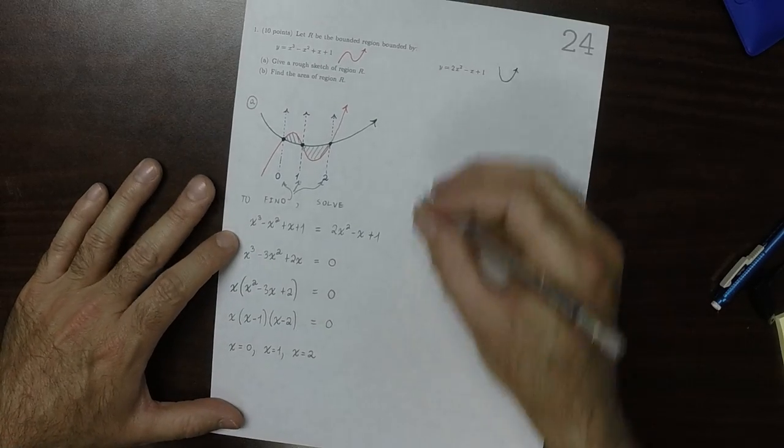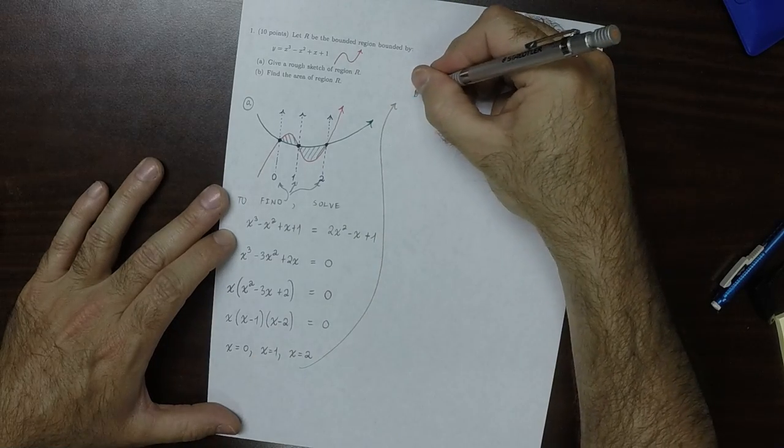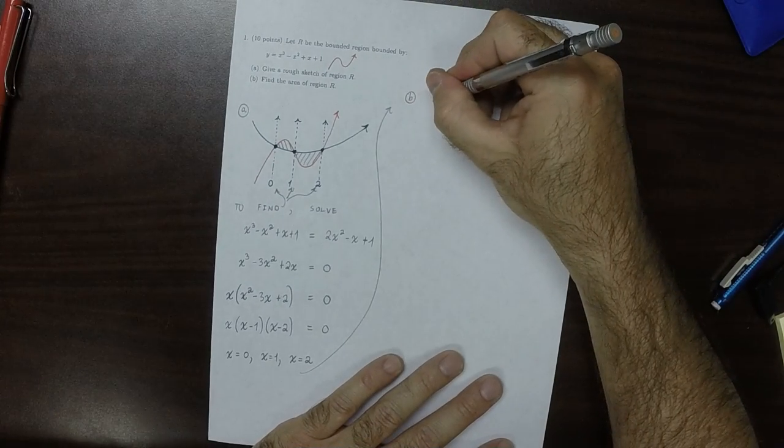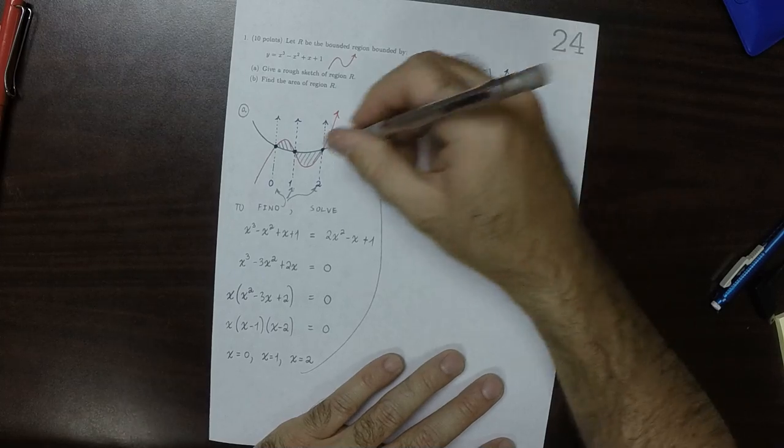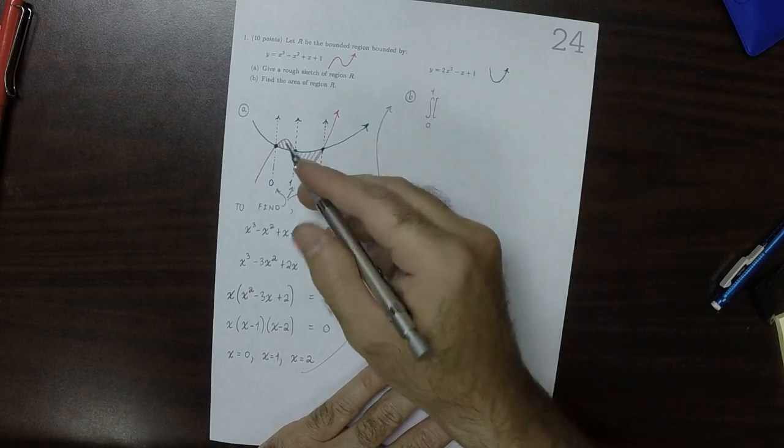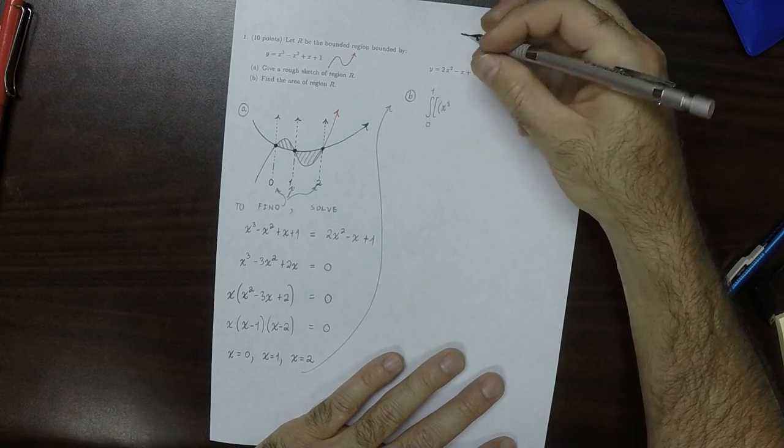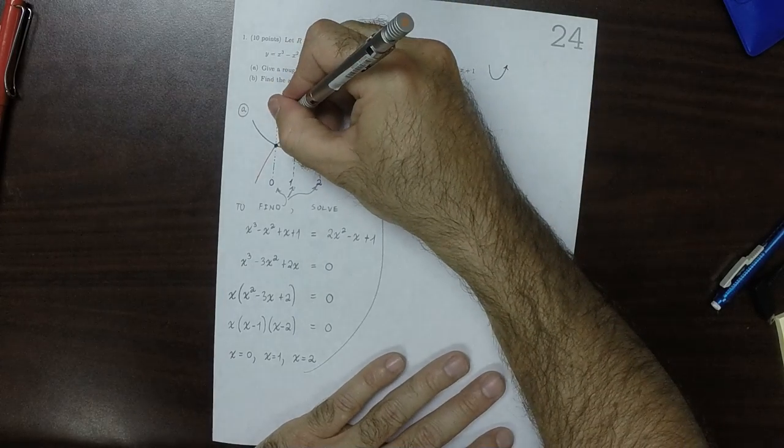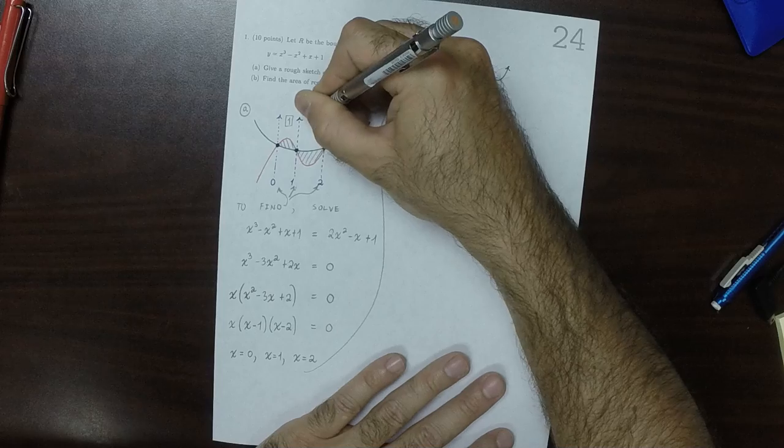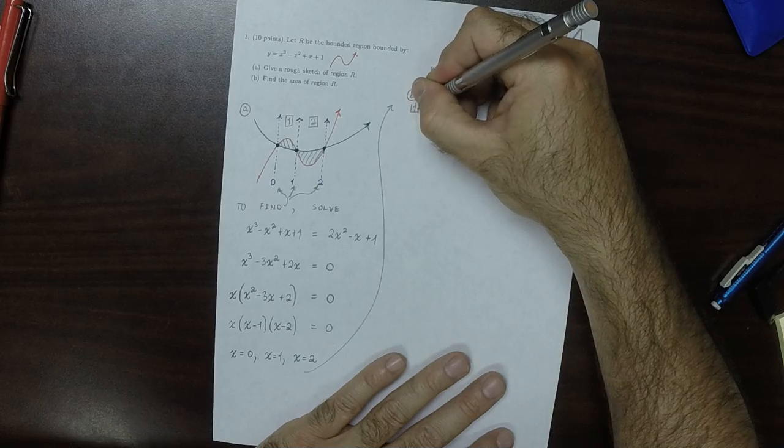So for part b, the area of the region is the sum of two integrals. The integral from 0 to 1, and it's going to have to be red minus green. I'll refer to this as region 1 or sub-region 1, and this one as sub-region 2. So here I'll do sub-region 1.